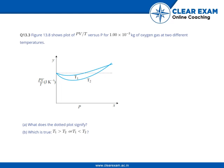The following plot shows a diagram of PV by T versus P for 1 times 10 to the power minus 3 kg of oxygen gas at two different temperatures.